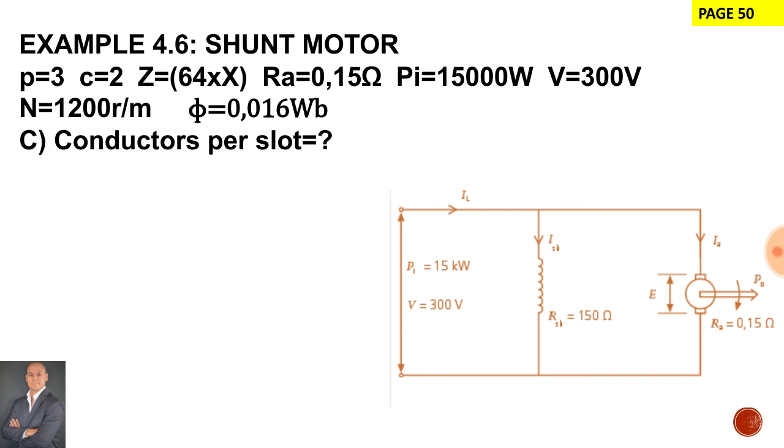Part C of this example we need to calculate the number of conductors per slot. Now before we attempt that let's first try and work out the unknown factor which is the total number of armature conductors. So we're going to be using the emf equation to help us.